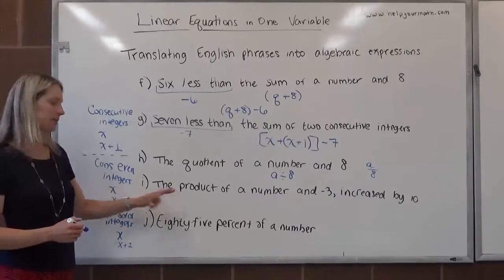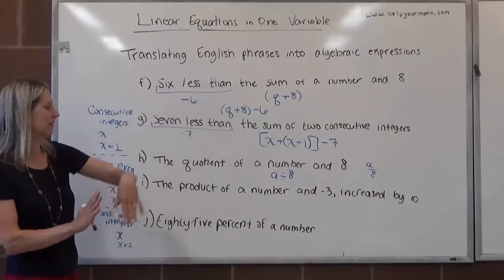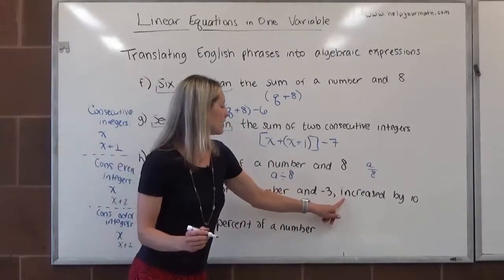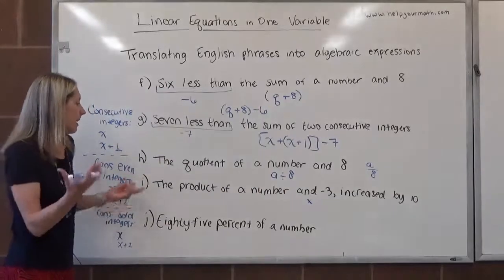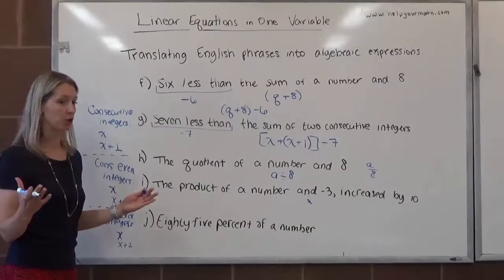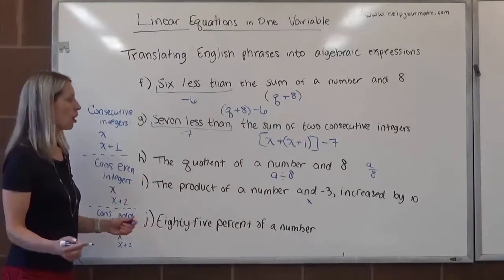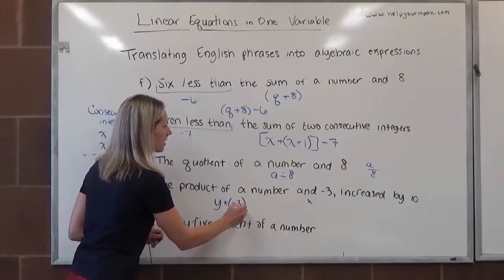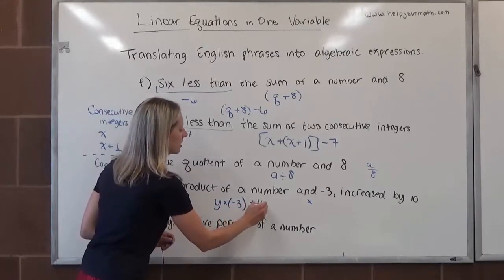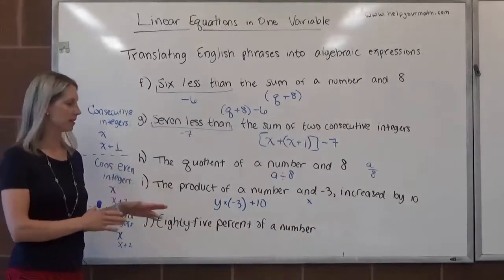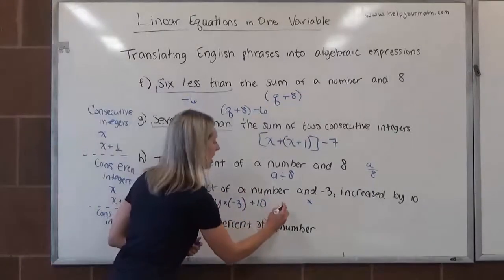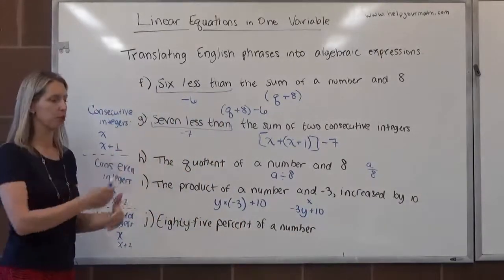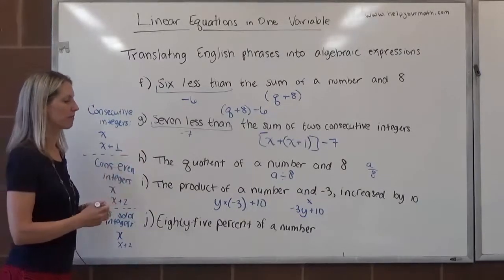Letter I, the product. Product is one of those special words. So we're looking for an 'and' here to separate the first piece of the product from the second. The product of a number and negative 3, so that's where I know the multiplication is going to happen. And then we're going to take that and we're going to increase it by 10. Here, again, something's happening to the product. You might want to use grouping symbols. They're very optional here. So we have the product of a number and negative 3. So we could say y times negative 3 increased by 10 plus 10. This is a very rare case where I might not do a direct translation just because this is very awkward. I might just rewrite it and say negative 3y plus 10. We're allowed to do that with multiplication. You can switch the order of the factors and not change the outcome.